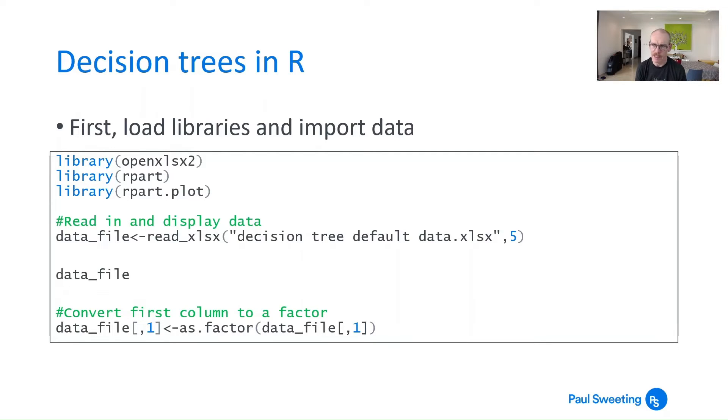If I don't convert it to a factor it'll get treated as a number and the analysis will think that it's supposed to be doing a regression analysis rather than a categorical analysis. So if I turn it to a factor it will recognize it as a label rather than a value and will have a categorical decision tree which is what we're trying to do.